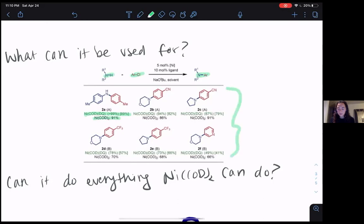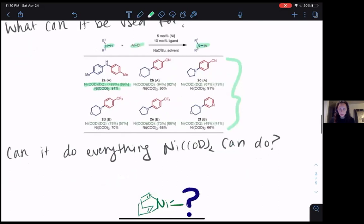In a lot of cases, nickel cod DQ actually performs better than nickel cod. For example, in the reaction I've already highlighted, nickel cod results in a 91% yield of the desired product. The yield is the amount of product that's made based on the amount of starting material you put into the reaction.